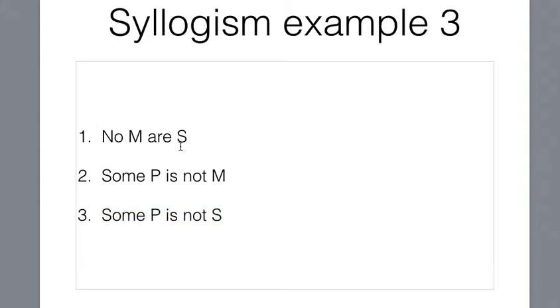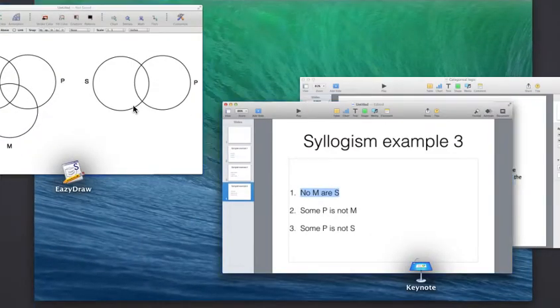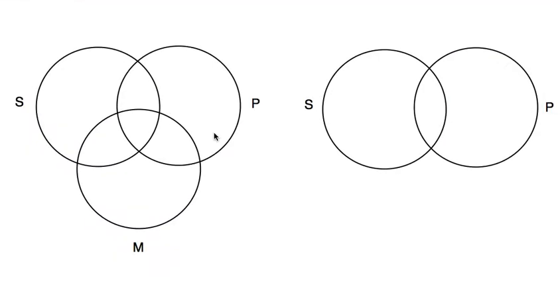Just like always, our important principle that we're going to follow is that we're always going to diagram our universal statements first. In this case, the No M are S, that is a universal statement, so we're going to diagram that first.